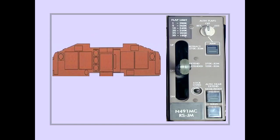The landing gear lever is located on the center panel. The gear lever has three detented positions: up, off, and down.